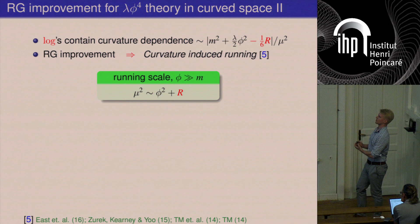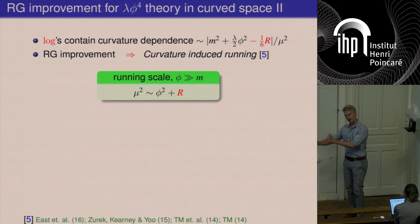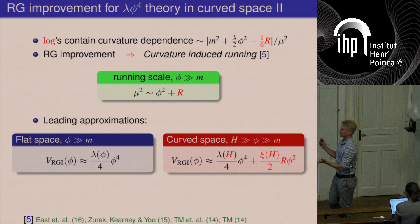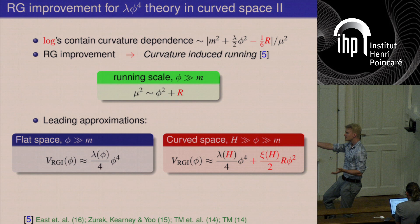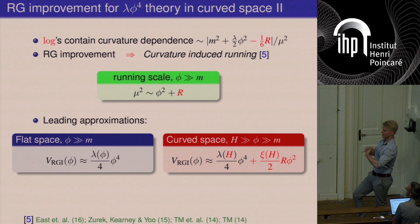As a summary of the differences from flat space: when the background curvature is large, i.e., the Hubble rate is the dominant scale, you get a similar quartic term but with running almost completely dominated by gravity, and you always also generate the non-minimal coupling term. In a Friedmann universe this summarizes the one-loop result, though the formalism applies to any general background.